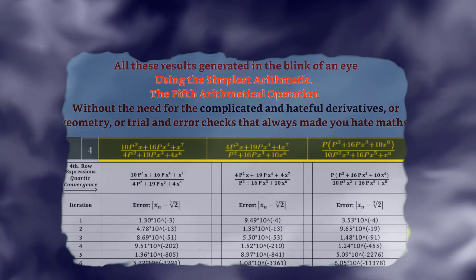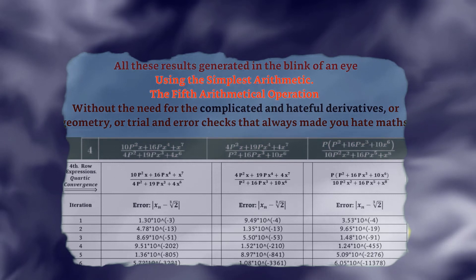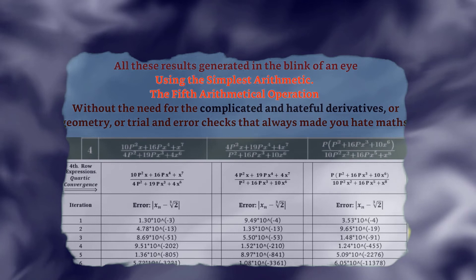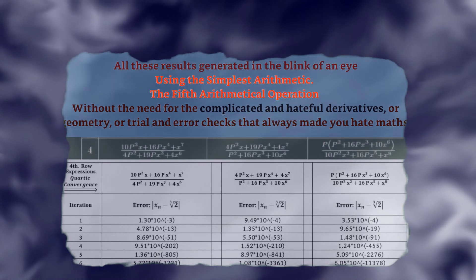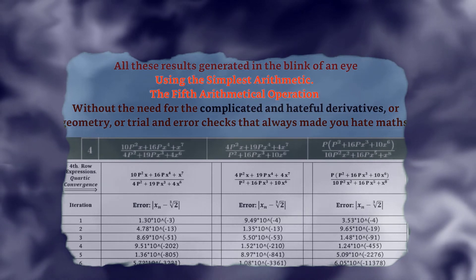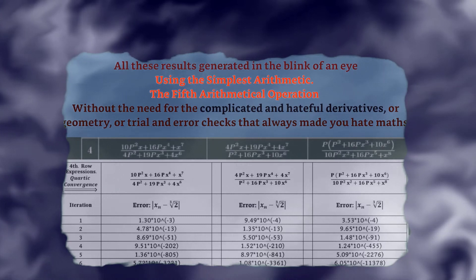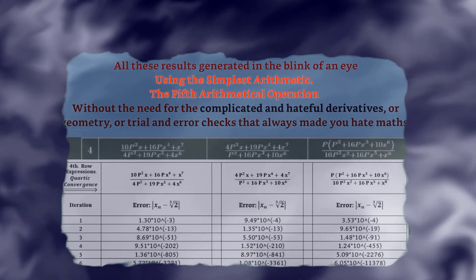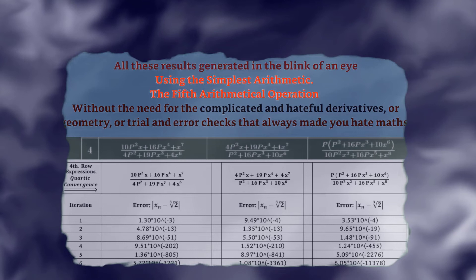For example, if we iterate the expressions in the fourth row, in the screen we can see the error with respect to the actual value of the cube root of 2. In the first two columns, the convergence is quartic. That is, the number of exact decimal places is multiplied by 4 in each step. We already know that the second function is equal to the Householder method of infinitesimal calculus.